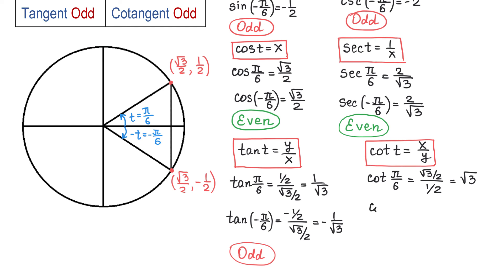Now let's find cotangent of negative pi over 6. Here x is still positive, square root of 3 over 2. However, y is negative 1 half. Positive divided by negative gives us negative square root of 3. So when t is replaced with negative t, we get the opposite of the value above. Then this function is odd.